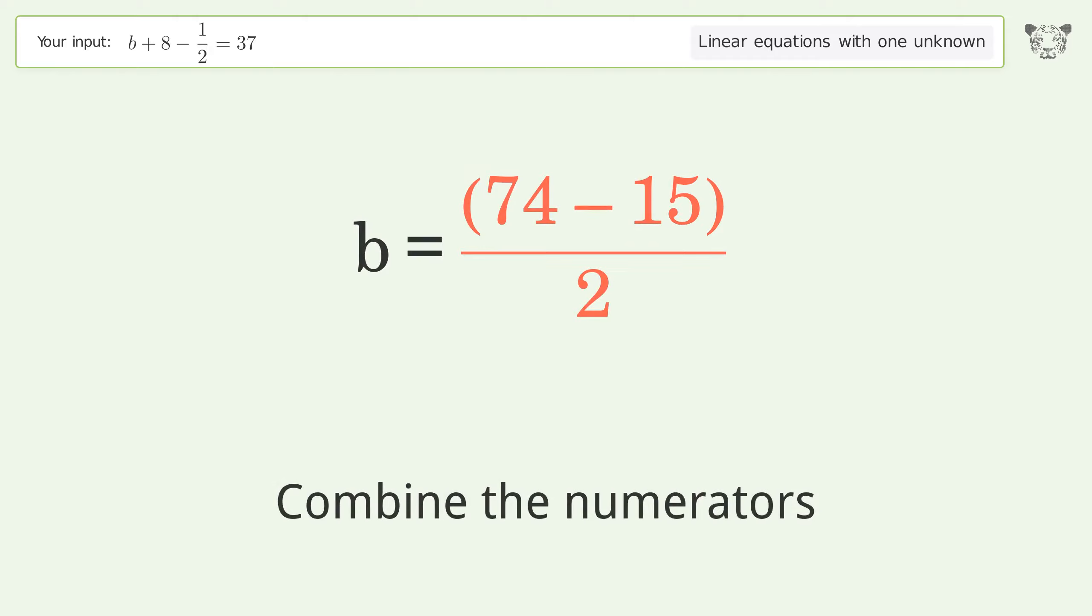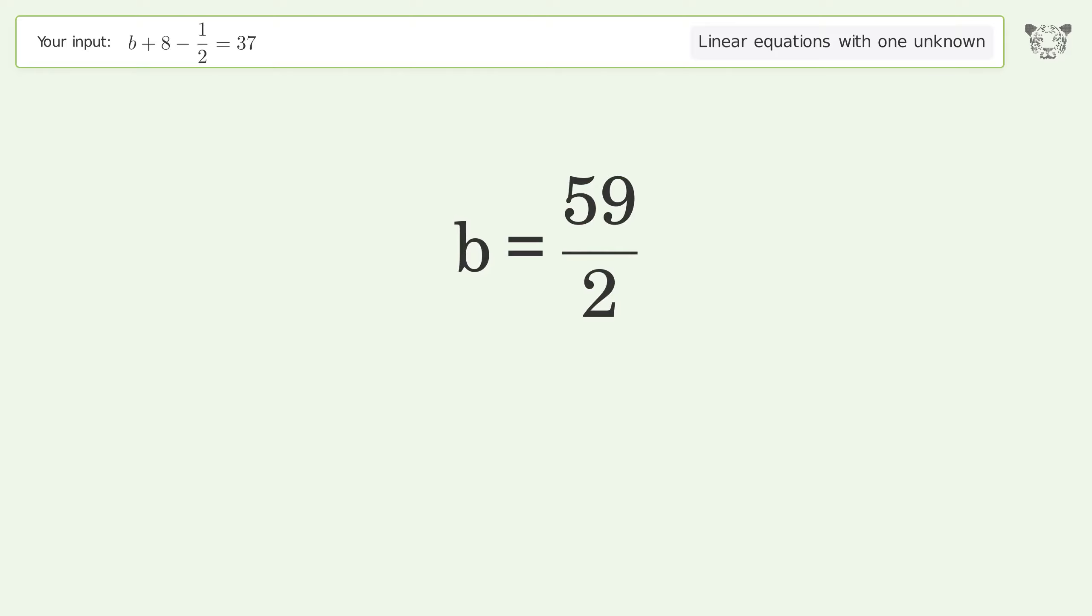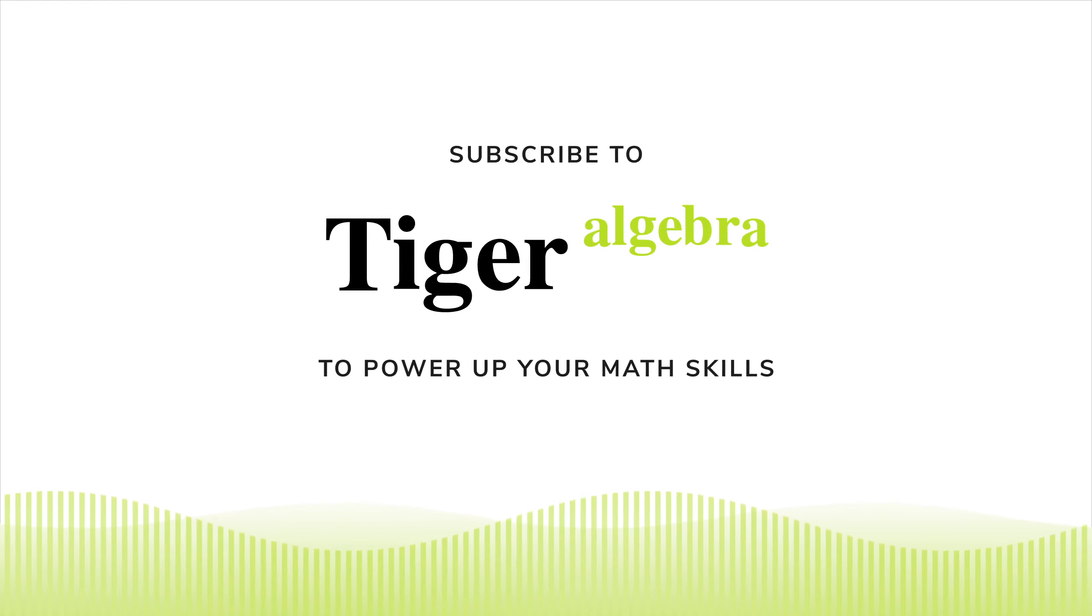Combine the fractions and combine the numerators. And so the final result is b equals 59 over 2.